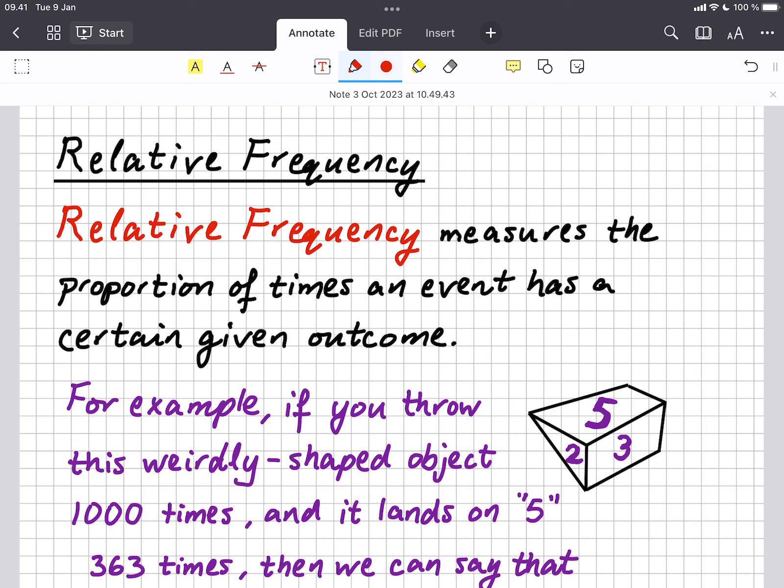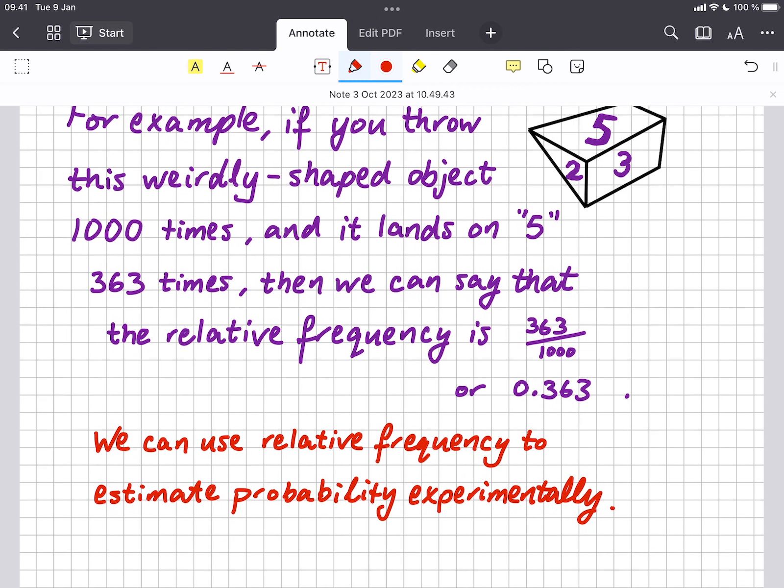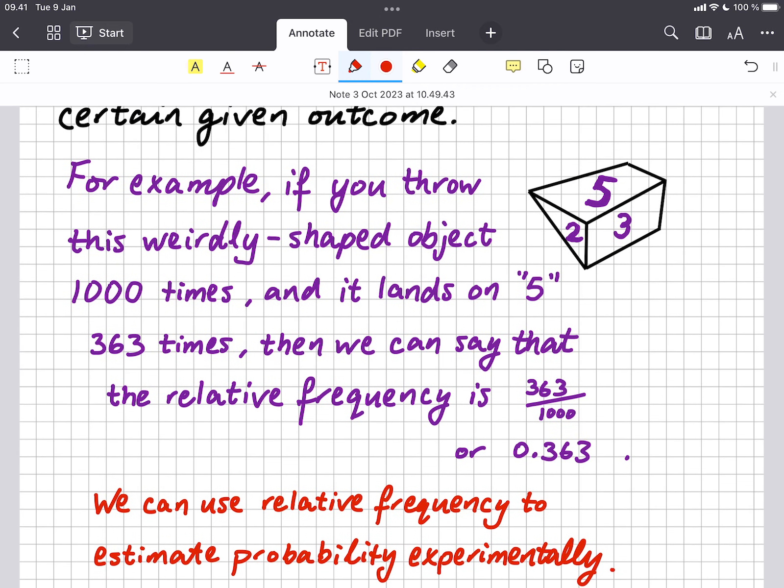In the notes, for example, if you throw this weirdly shaped object a thousand times and it lands on five 363 times, then we can say that the relative frequency is 363 out of a thousand, or 363 thousandths as a fraction.